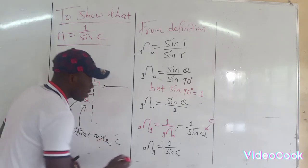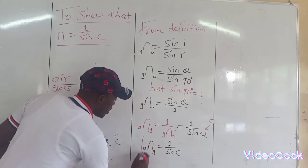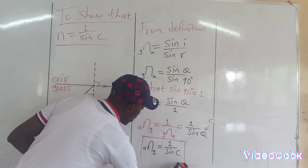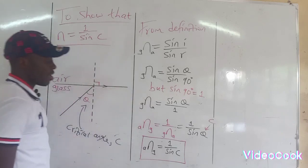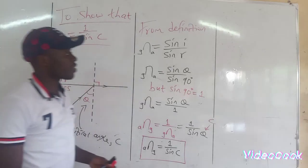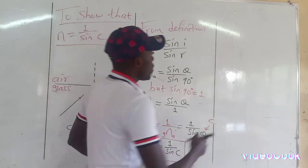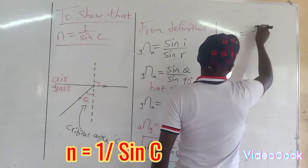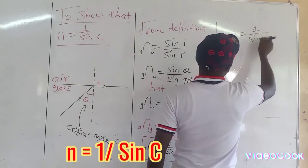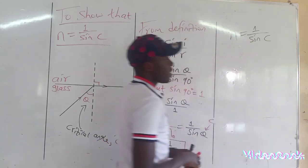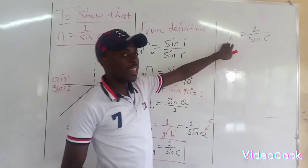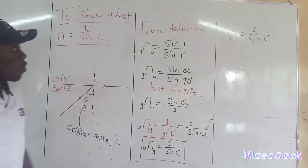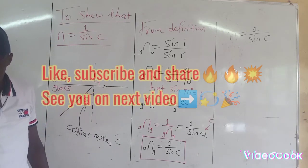So in other words, it is right to say that refractive index is given by one over sine c. And that occurs when we are considering a ray of light traveling from a denser medium to a less dense medium. So generally, refractive index can be given by one over sine c.